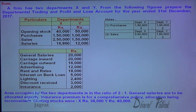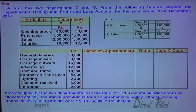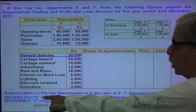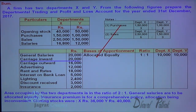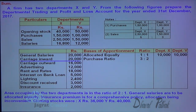Now, let me start allocation of expenses with basis of apportionment, ratio, and amounts for department X and Y. General salaries are allocated equally in 1:1 ratio — 10,000 each. Carriage inward: basis of apportionment is purchases in ratio 3:2. So 20,000 distributed as 12,000 and 8,000.